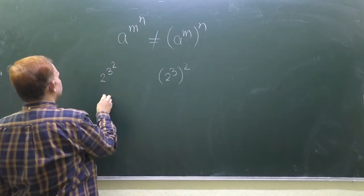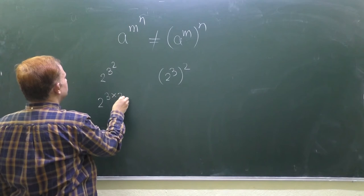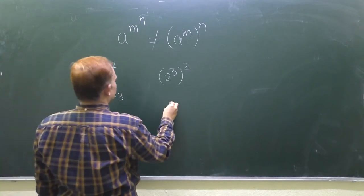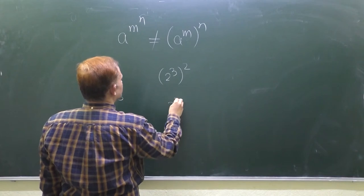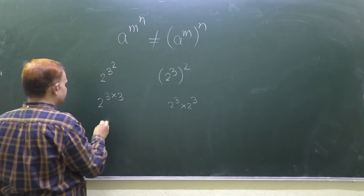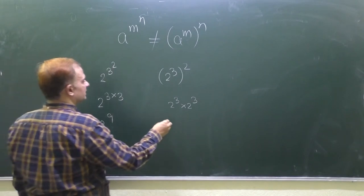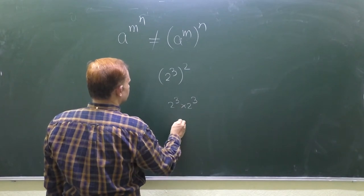What is this? This is 2 to the power 3 times 3, and this is what? 2 to the power 3, times 2 to the power 3. So what is this? This is 2 to the power 9, and this is what? 2 to the power 3 plus 3.